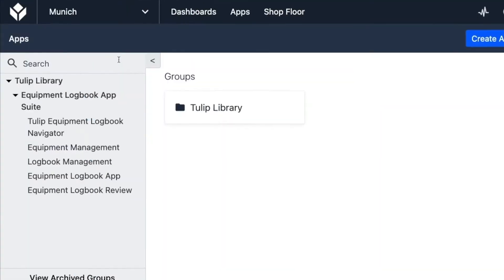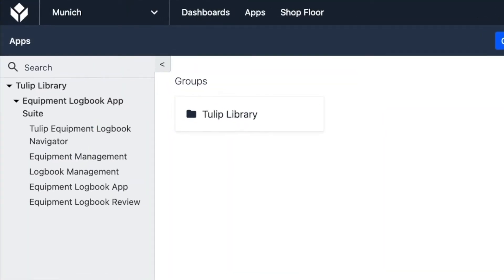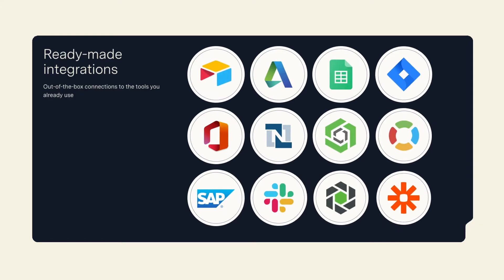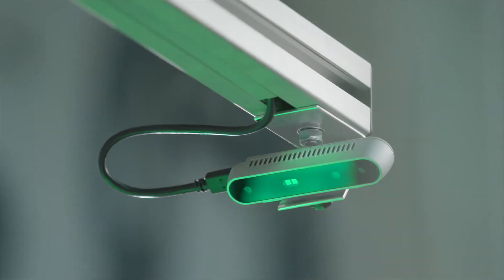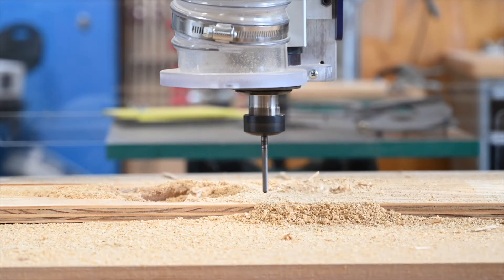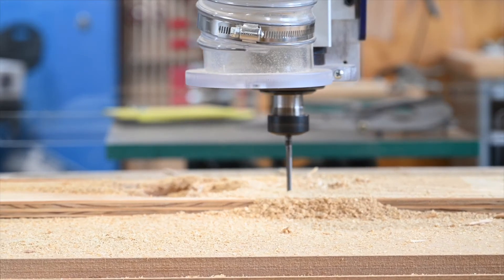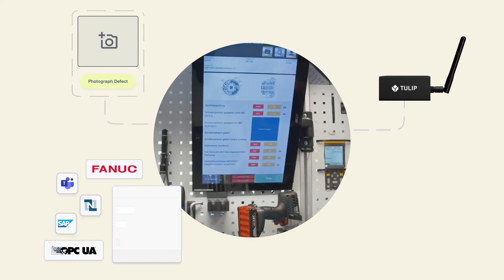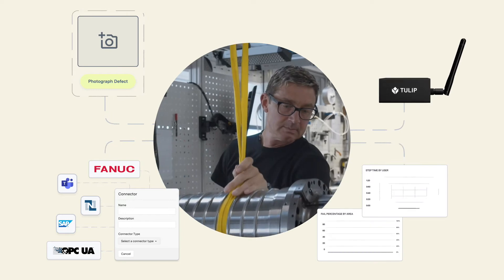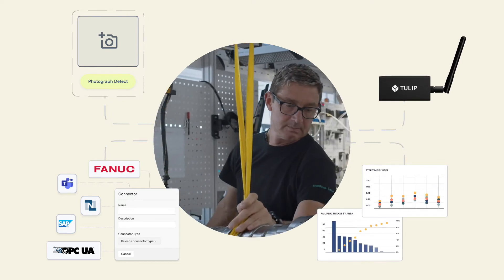Teams in Tulip can share resources across facilities such as connectors, cameras, and machine attributes, while still allowing individual teams to manage their own library of apps, tables, machines, and analytics.